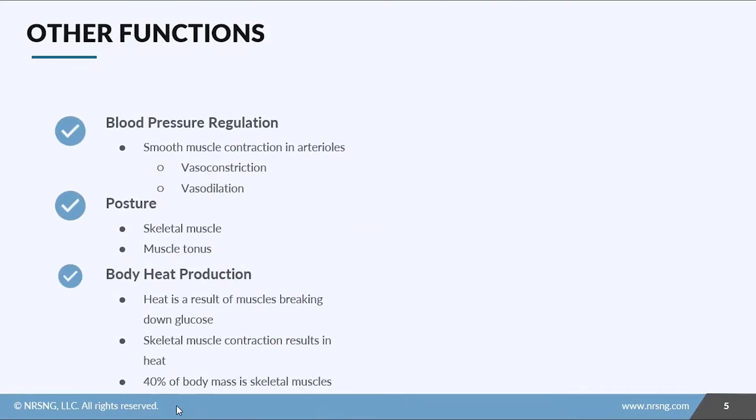But muscles have other cool functions too. First off, they regulate blood pressure. Smooth muscles contract in the arterioles and blood vessels to constrict and dilate. If we need blood pressure to go up, you'll get constriction. If you need blood pressure to go down, they'll dilate.